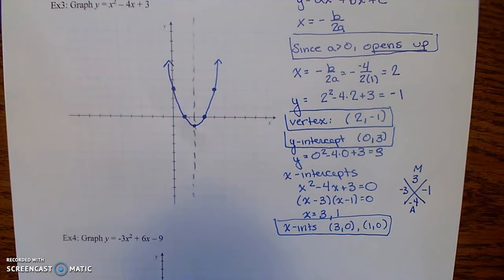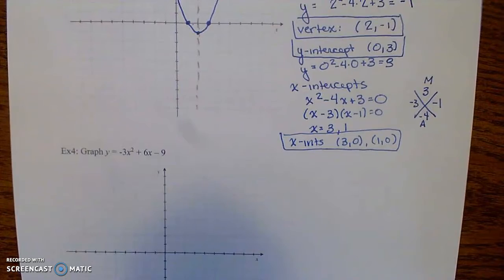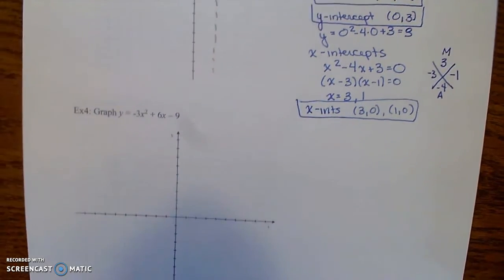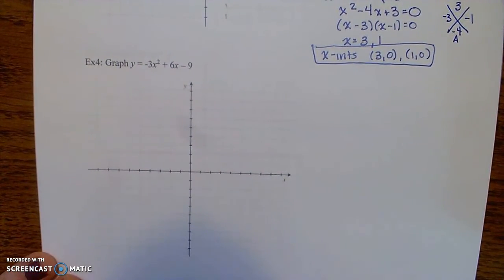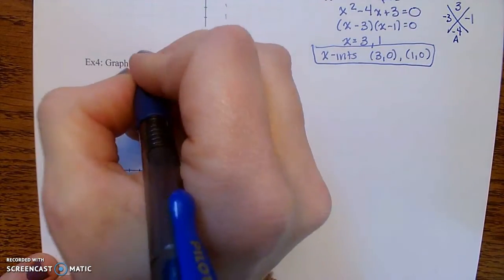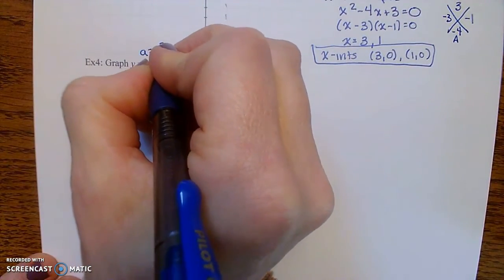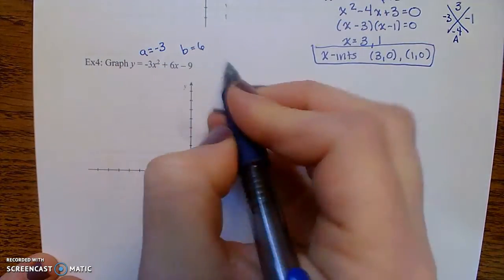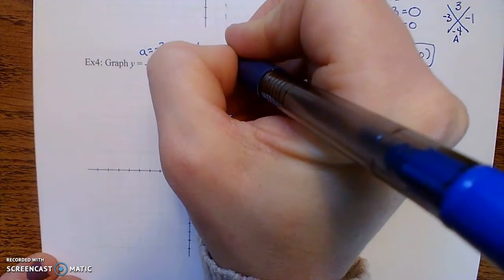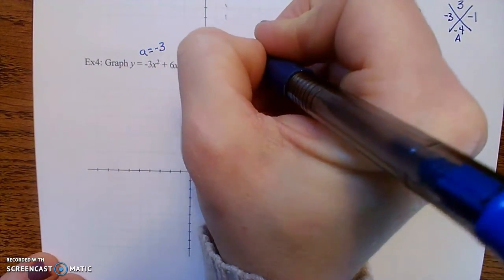Let's do one more example in standard form. Negative 3x squared plus 6x minus 9. So notice here, a is negative 3 and b is 6. Also, c is negative 9, but we won't use that in our calculations.